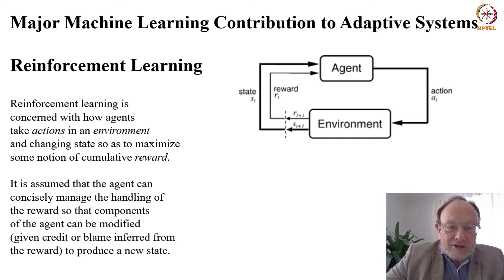In the long run this creates some kind of optimal performance. Reward of course is a general word. It can be negative, it can be positive, so we can say reward can be credit or can be blame.